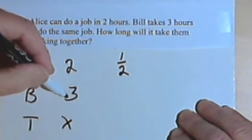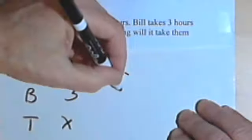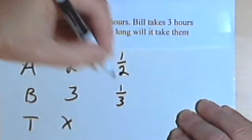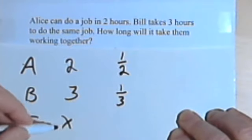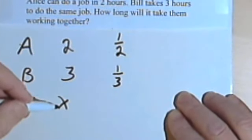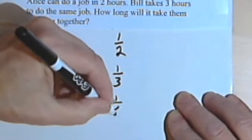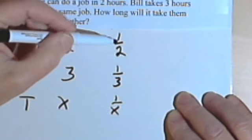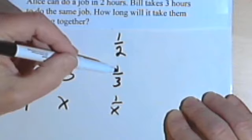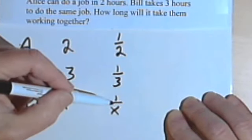Bill takes three hours to do the job, so in one hour he can do one-third of the job. And if the total job takes x hours, then in one hour one over x of the job will be done. Now we can combine one-half and one-third and set that equal to one over x.